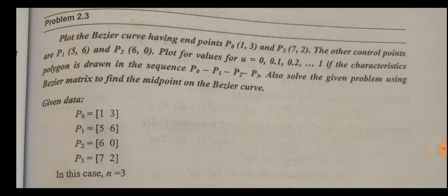Shall we go to the problem? In the problem: plot the Bezier curve having end points P0 and P3. The other control points are P1 and P2. Plot for values of u equal to 0 up to 1. If the characteristics polygon is drawn in the sequence P0, P1, P2, P3. And also solve the given problem using the Bezier matrix to find the midpoint on the Bezier curve.